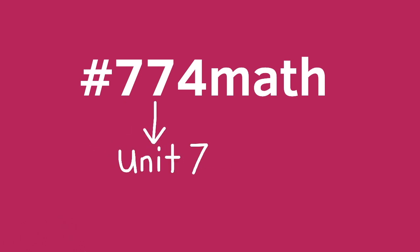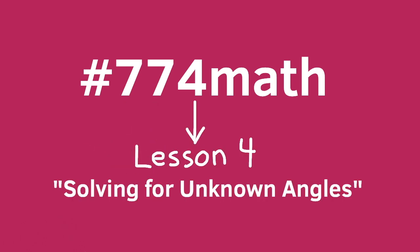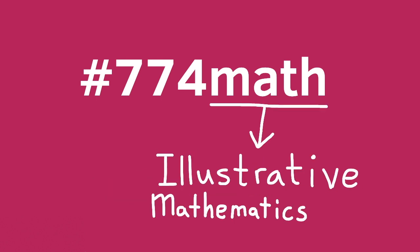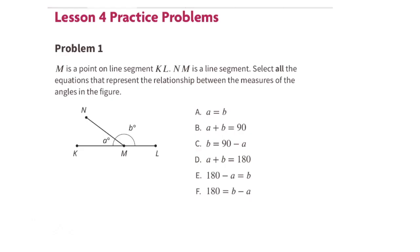7th grade, Unit 7, Lesson 4, Solving for Unknown Angles, Illustrative Mathematics Problem number 1. M is a point on line segment KL. NM is a line segment. Select all the equations that represent the relationship between the measures of the angles in the figure.